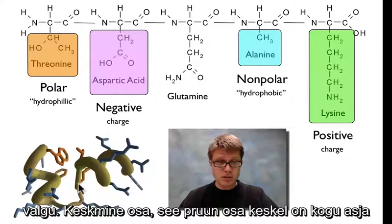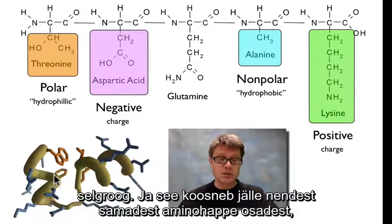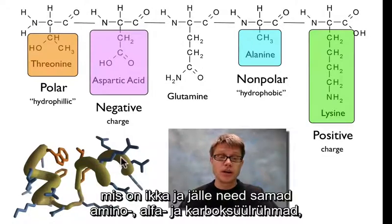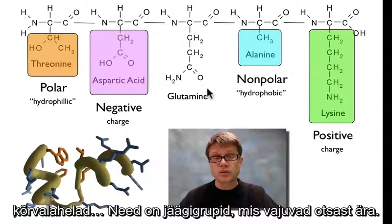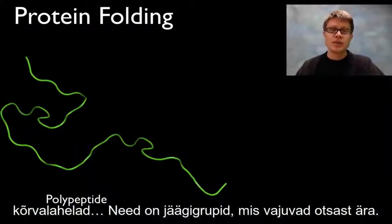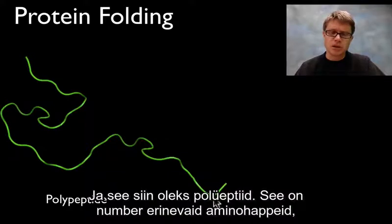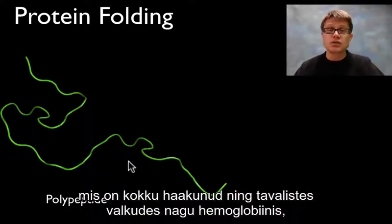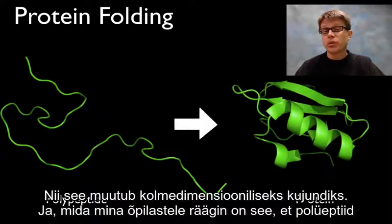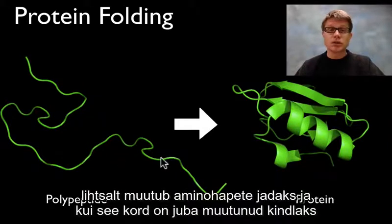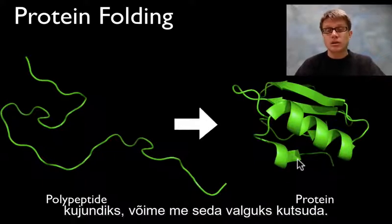The middle brownish-tan part is the backbone, made up of the parts of the amino acid that are the same — the amino group, the alpha carbon, and the carboxyl group, over and over again. All the things trailing off the outside are the R groups, called residue groups. A polypeptide can have thousands of amino acids — hemoglobin, found in your blood, is an example. This will fold into a three-dimensional shape. A polypeptide is just the sequence of amino acids, and once it's folded into a specific shape we can call it a protein.